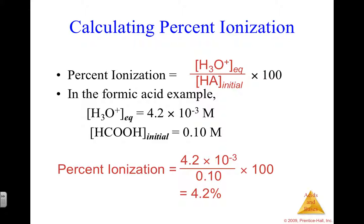That gives 4.2%. Formic acid is a weak acid — it's not one of the six strong acids we memorized. We can also see its percent dissociation, which is essentially the same as percent ionization, just a different way of describing it, is significantly less than 100 — in fact only 4.2%.